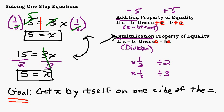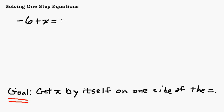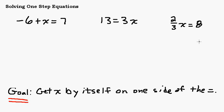Let's try a couple more. I'm going to mix it up with adding, subtracting, multiplying, and all kinds of operations. It might be a good idea to pause the video and try these: negative 6 plus x equals 7; 13 equals 3x; and a tricky one — two-thirds x equals 8. Go ahead and pause the video, give those a try, and resume when you're ready.